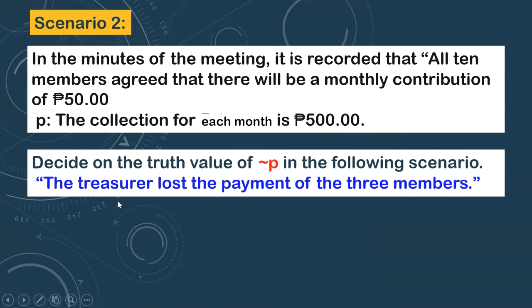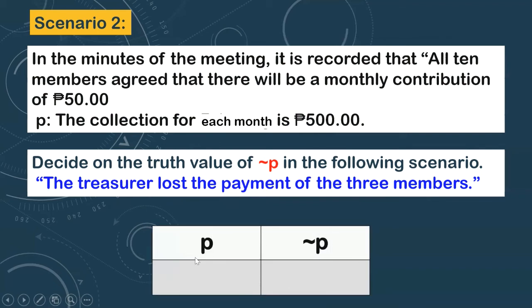For the second scenario: 'The treasurer lost the payment of the three members.' Let's make a mini truth table again. What is the truth value of P? Proposition P says the collection is 500 pesos. Do you think it would still be 500 pesos if the treasurer lost the payment of three members? No. So the truth value of P is false. And the negation of a false statement is true. The truth value of not P is true given this scenario.